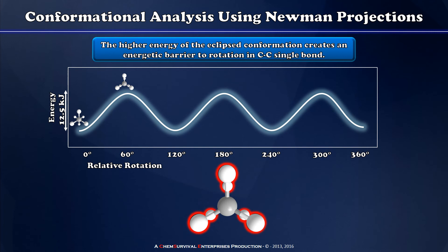If I continue to rotate my carbon-carbon bond and go another 60 degrees, I now have another staggered conformation, lowest in energy. Another 60 degrees I reach a new eclipsed conformation.